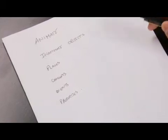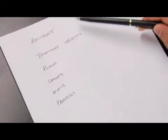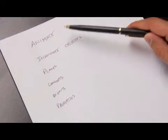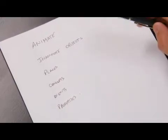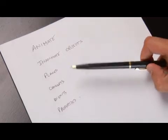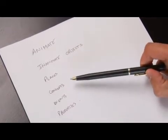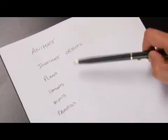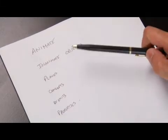Almost anything can be classified in taxonomic schemes. This includes animate, inanimate objects, places, concepts, events, properties, along with many others such as relationships.